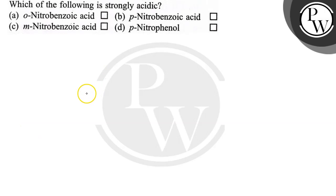Hello everyone, let's read the question. Which of the following is strongly acidic? Ortho-nitrobenzoic acid, para-nitrobenzoic acid, meta-nitrobenzoic acid, and para-nitrophenol. So we all know that benzoic acid or COOH group